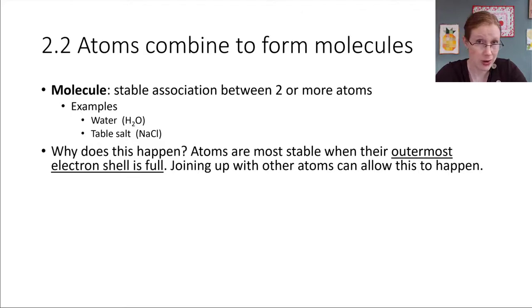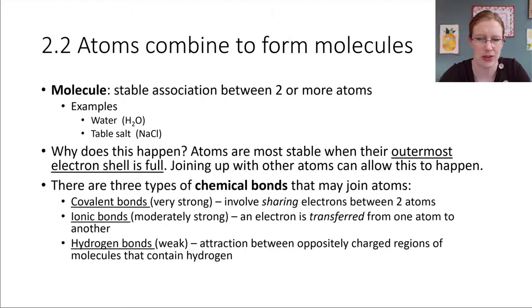What can happen is if that atom joins up with another atom, then maybe it will be able to complete that shell, that outermost shell. We'll take a look at some examples of this in just a minute. When this association happens, it results in what's called a chemical bond. And there are three major types of chemical bonds. You'll need to know all three of them, so we'll take a look at them one at a time.